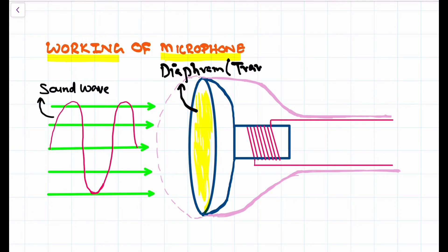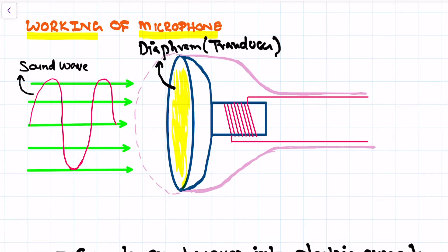There is a copper coil wrapped around a permanent magnet. This is the permanent magnet.